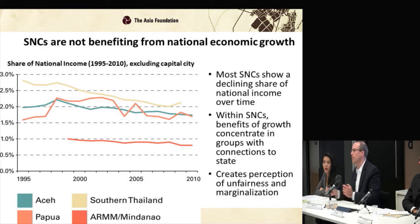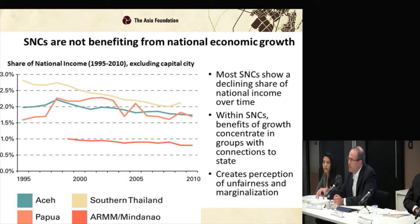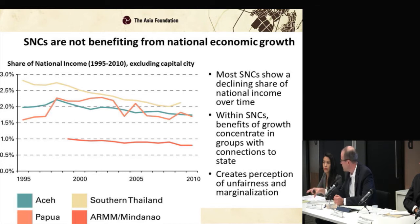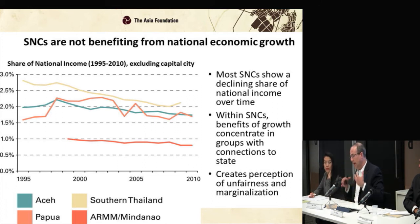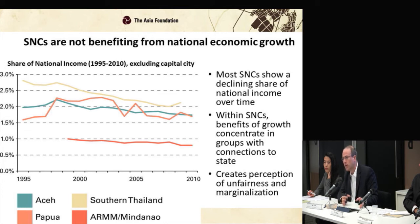This data compares four subnational conflict areas in Southeast Asia, looking at their share of national income compared to the rest of the country minus the capital city — comparing conflict areas to other rural areas and secondary cities. We see consistently that these areas have had a declining share of national income over 30 years or more. And within these areas, even where there's been some economic growth, it's mostly concentrated in certain ethnic groups — usually those allied with the state — so there's a huge amount of disparity.